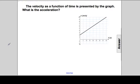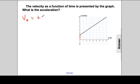From the slope we can get tremendous information. The question is: velocity as a function of time is presented by the graph — what is the acceleration? What is the starting speed at t = 0 seconds? We draw a line up and read the speed. We start off with a positive velocity of 2 meters per second.